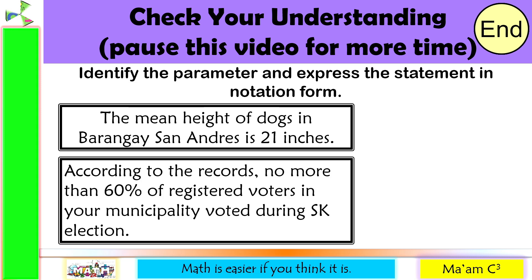Let us answer. Identify the parameter and express the statement in notation form. Number one, the mean height of dogs in Barangay San Andres is 21 inches. So we have here mean, so this is mu, and it is equal to 21.